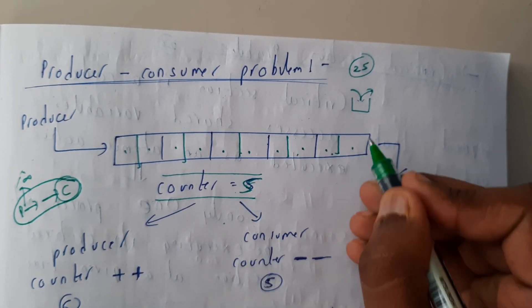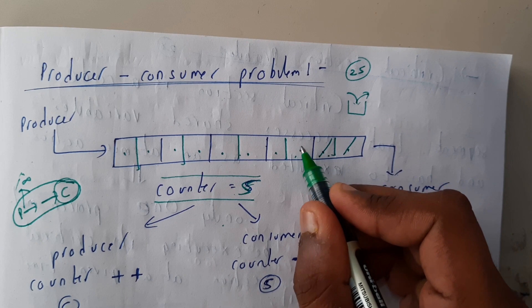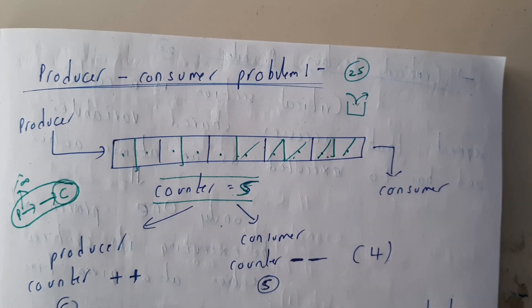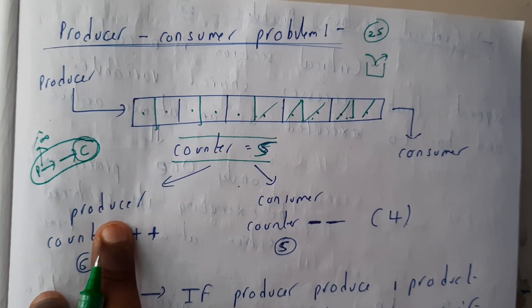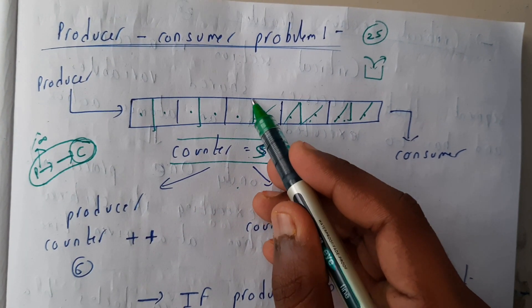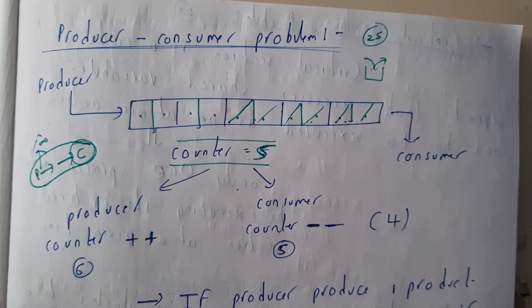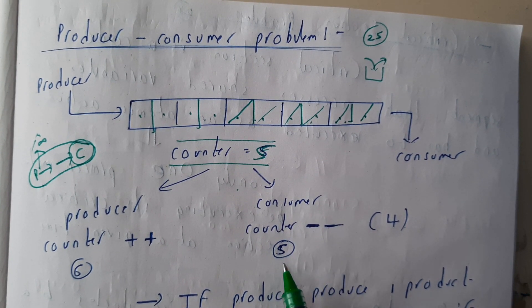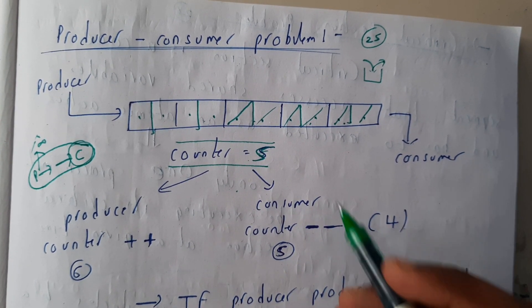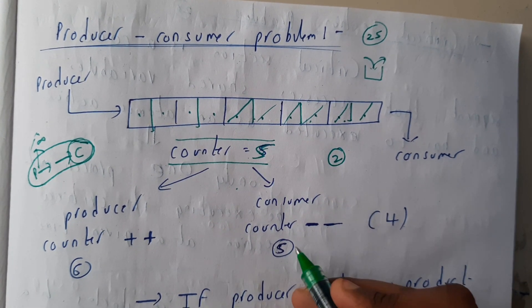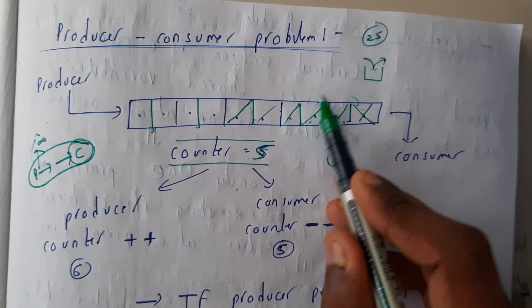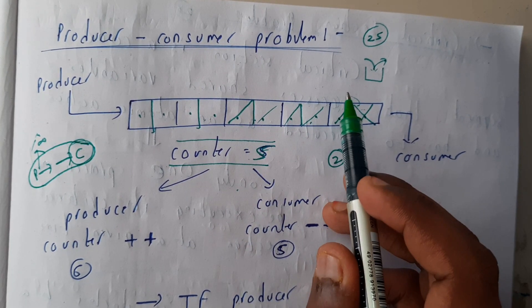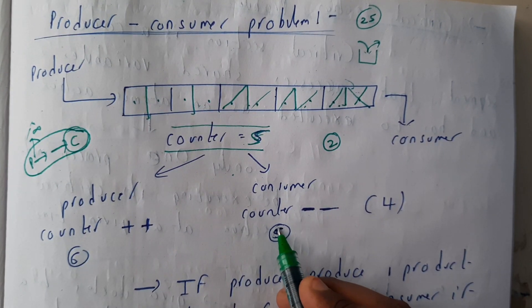At this moment five slots are full. The producer produced one more item, so one block will be filled. Then the consumer consumed one item. We will be taking two cases. After some time, the consumer consumed an item, so this will be removed and moved. The value will become five.